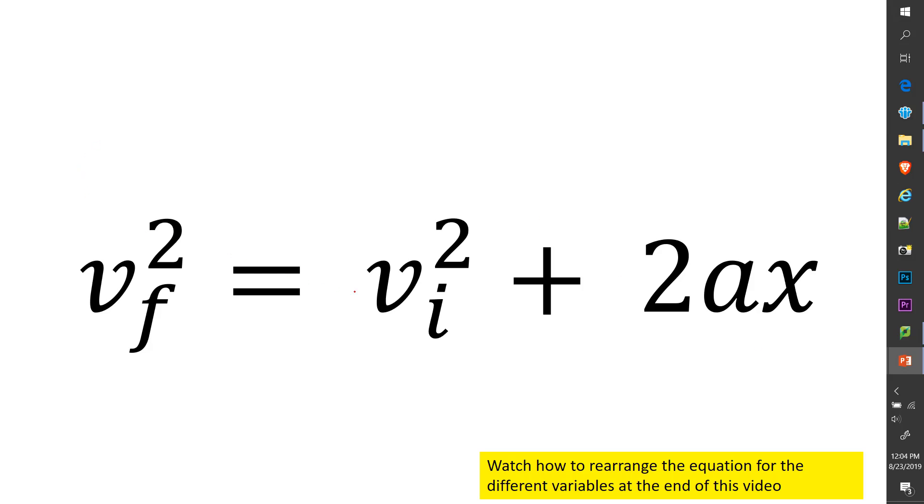In this video, I'm going to use the equation VF squared equals VI squared plus 2AX. I'm going to show you when to pick it and how to use this, or how to pick between your equations. And at the very end, I'm going to show you how to rearrange this equation if you want to rearrange it for any one of these variables.